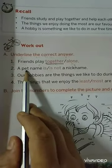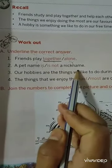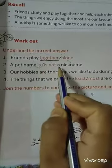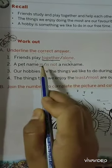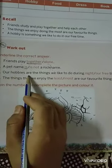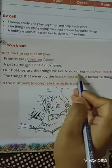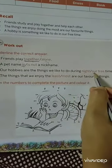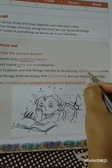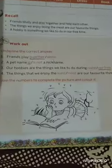Second: a pet name is or is not a nickname. A pet name is a nickname. Underline is. Third: our hobbies are the things we like to do during night or free time. Hobbies means things we like to do in our free time. Underline free.